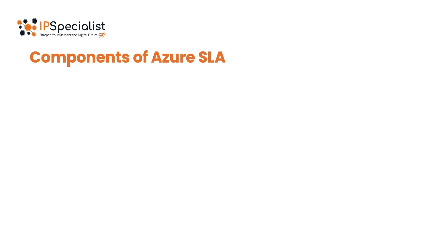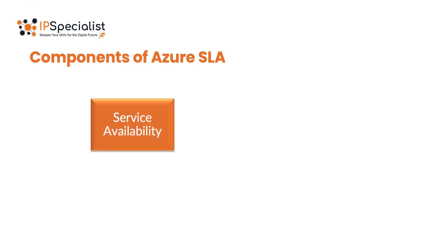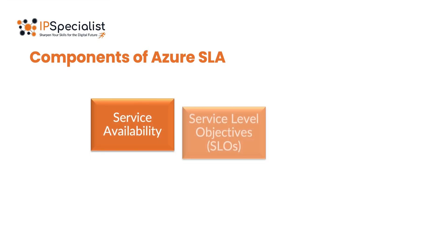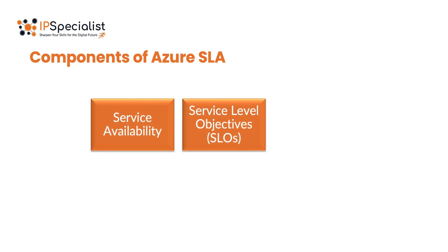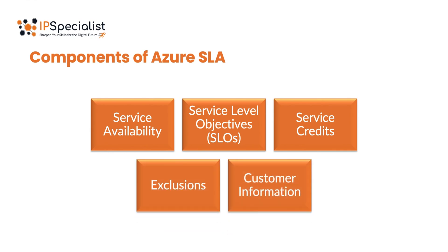Moving on, let's look into the different components of Azure SLA. The main components include Service Availability, Service Level Objectives, Service Credits, Exclusions, and Customer Information.